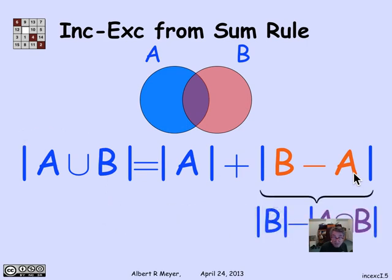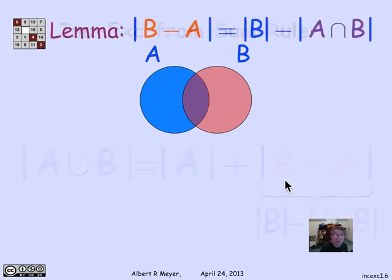Now I need a lemma that says |B-A| = |B| - |A∩B|. If I get that, then I've proved inclusion-exclusion, because now I have |A| + |B| - |A∩B|. So we need a lemma.